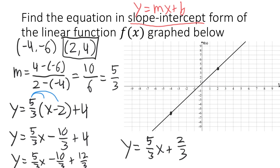This is the slope-intercept form of our line, but notice that we were given the name f(x) for our function, and so we should use that when we report our answer: f(x) equals 5 over 3 x plus 2 over 3. Notice that this also confirms our initial suspicion about the y-intercept — we had seen in the graph that it was somewhere between 0 and 1, and now we know that it is 2 thirds.